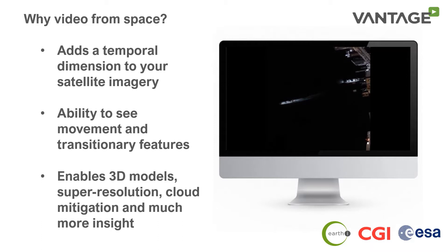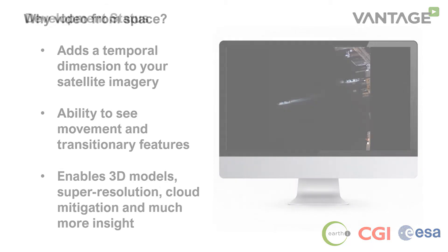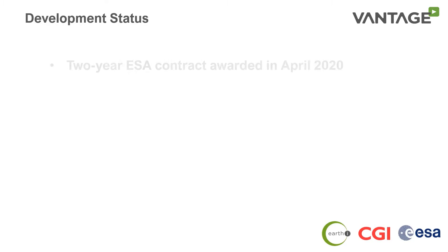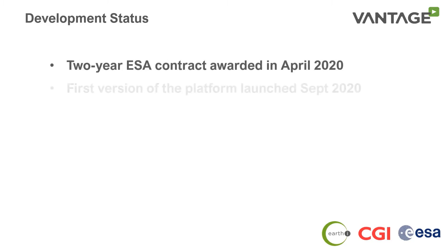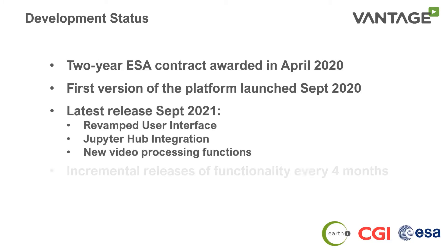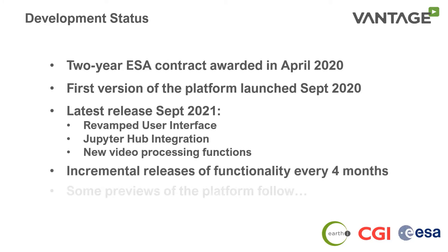Vantage is a two-year project. The first version went live in September 2020 and the latest release adds a new graphical user interface, several new processing functions, and Jupyter Hub integration. We will continue to release new versions of the platform every four months.